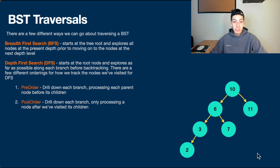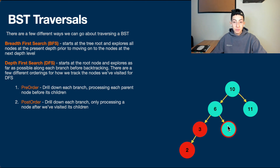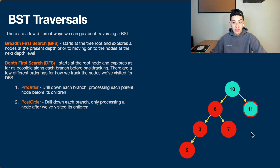Post-order is where we drill down each branch only processing a node after we've visited all its children. Starting at 10, we visit but do not process it. We visit 6 — has children, don't process. Visit 3 — has children, don't process. We get to 2, which has no children, so we process it. We backtrack and process 3, then continue to 6's right children, process 7, then process 6. We move back to 10, visit and process 11, and only then do we process 10.